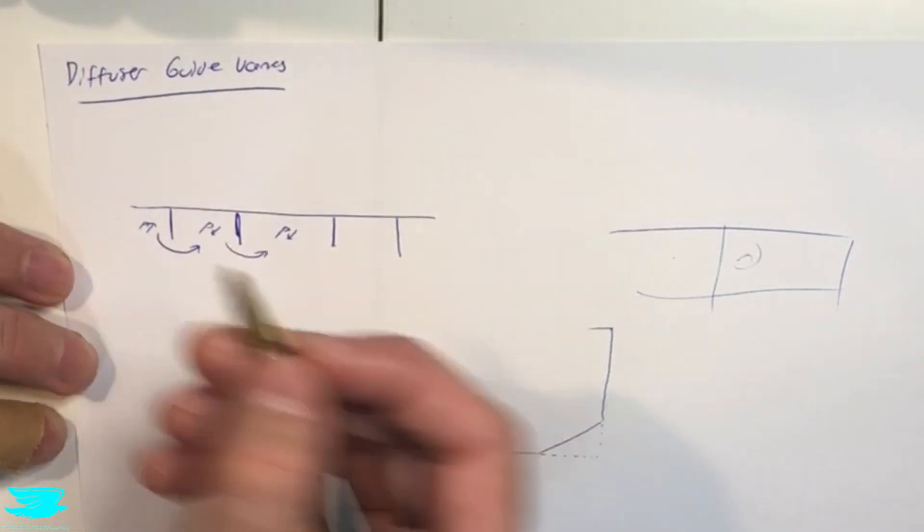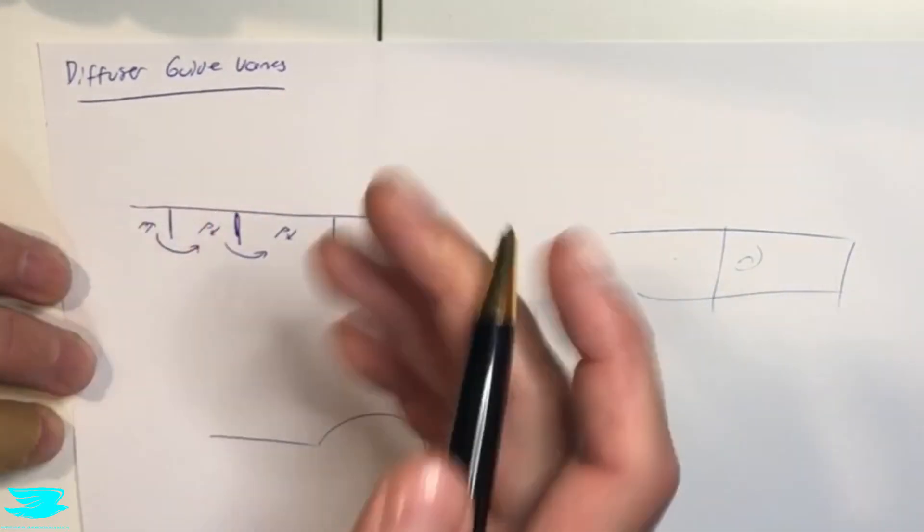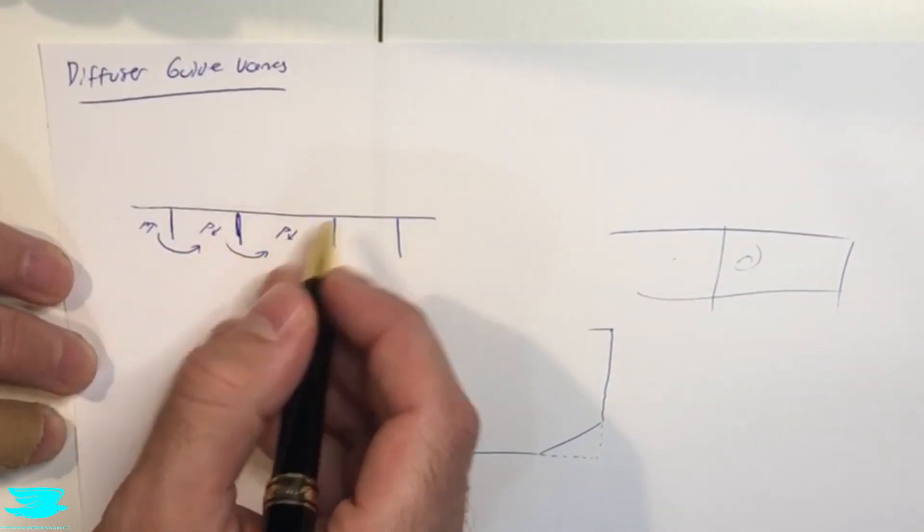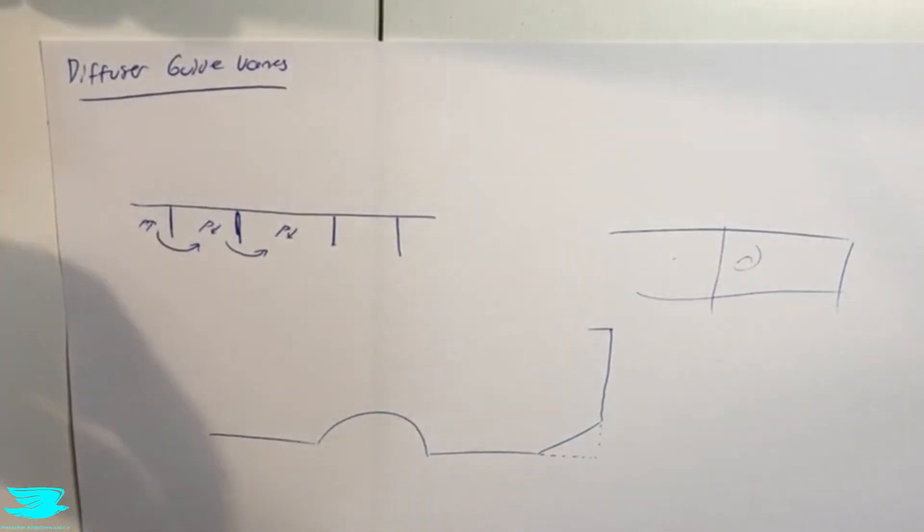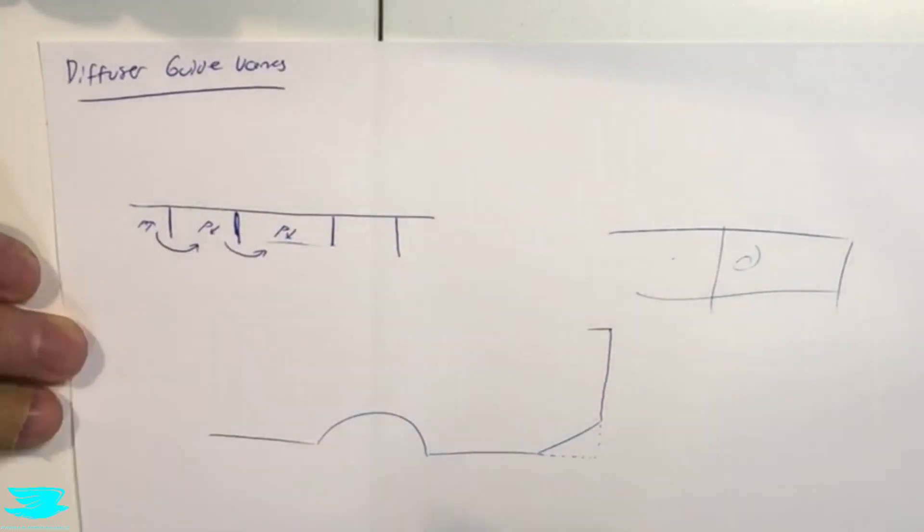If we didn't have these vanes here, the higher pressure here would bleed into this region, make that higher pressure as well, which would then subsequently bleed into this region as well. So vanes are ways to segregate these different pressure zones and thereby increase the downforce because this region here, which is very low pressure, can still continue to have low pressure.